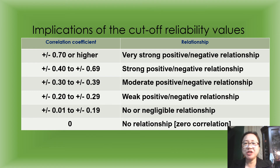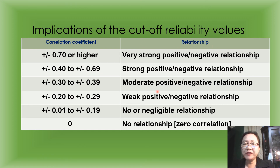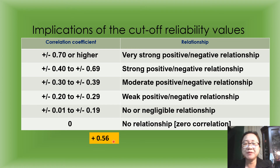Now, what are the implications of the different cut-off reliability values? We have the correlation coefficient values and their corresponding relationships. For example, if our obtained value is positive 0.56, this value lies in a particular range on the scale.